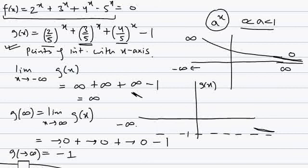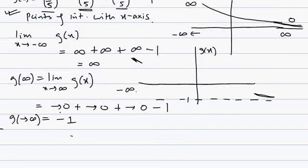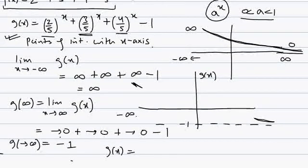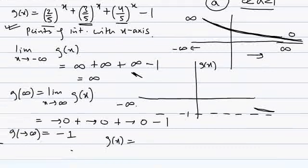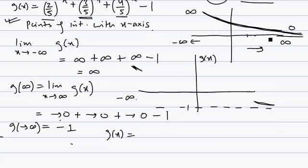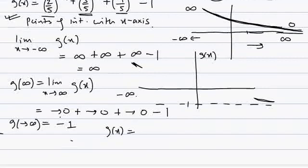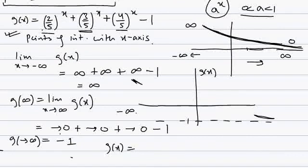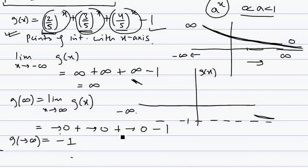Now, g(x) is a strictly decreasing function. The graph of a^x for 0 < a < 1 is always decreasing — as you increase x, y falls throughout every interval. So in g(x), as x increases, each component (2/5)^x, (3/5)^x, and (4/5)^x all decrease, and the constant -1 is static. Therefore g(x) is strictly decreasing.